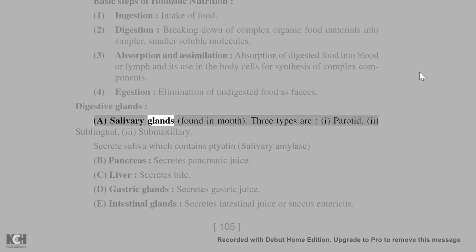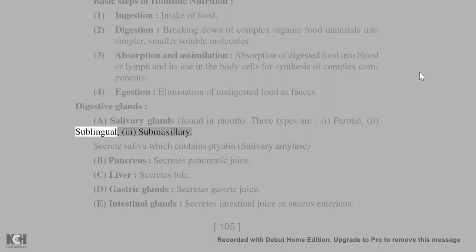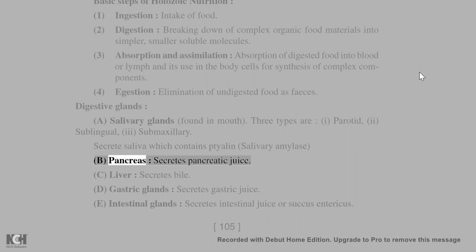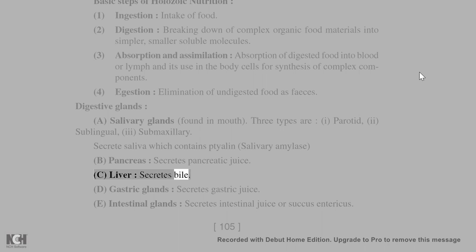Digestive glands: A. Salivary glands — found in the mouth; 3 types: 1. Parotid, 2. Sublingual, 3. Submaxillary. These secrete saliva which contains ptyalin (salivary amylase). B. Pancreas — secretes pancreatic juice. C. Liver — secretes bile.